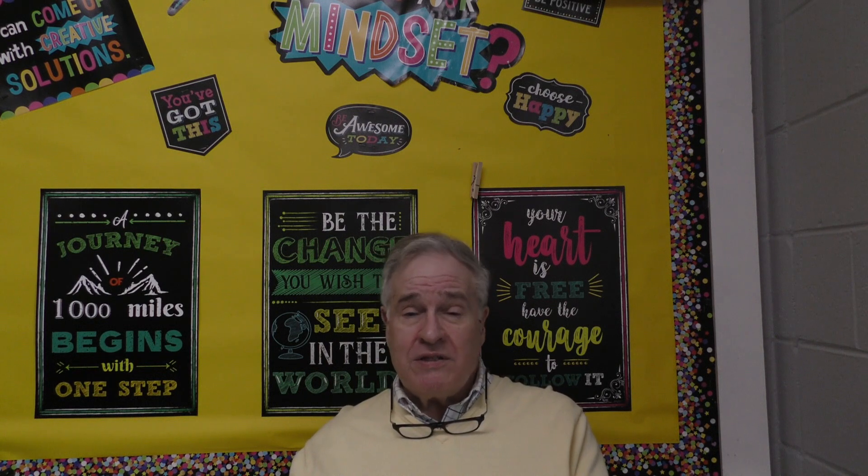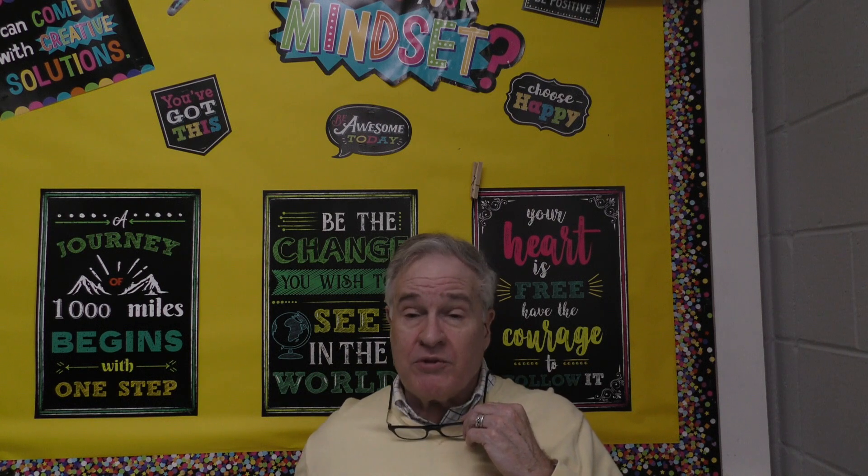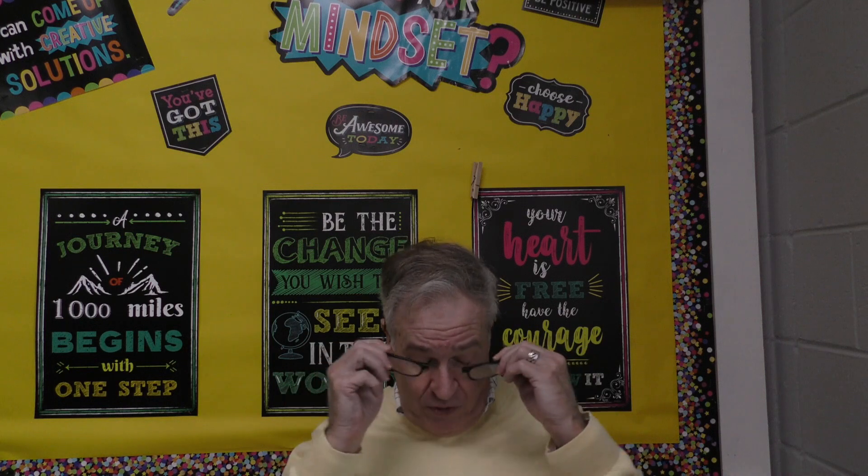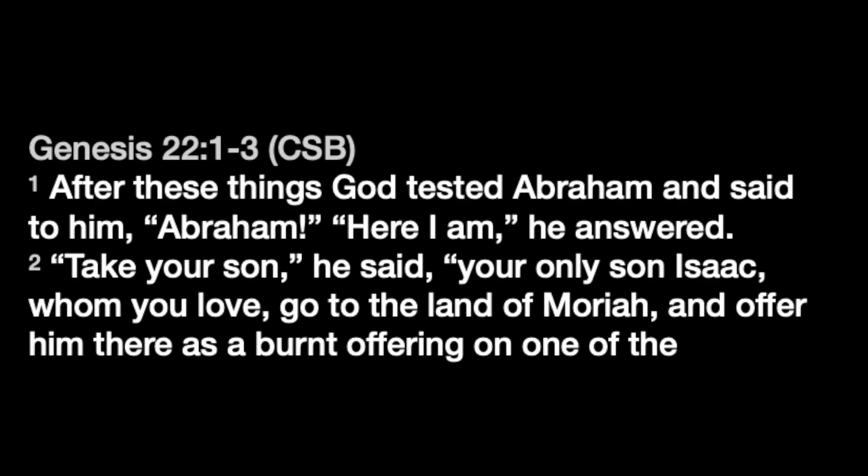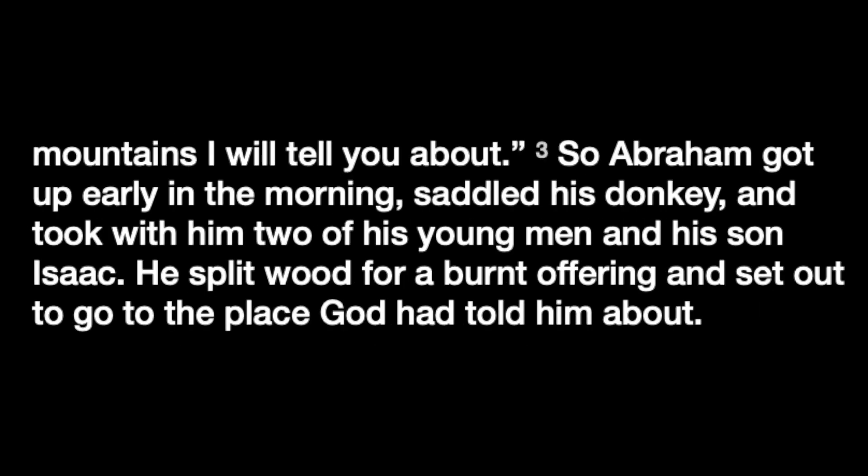This passage begins with a command. In Genesis chapter 22, beginning in verse 1, we read: 'After these things, God tested Abraham and said to him, Abraham. Here I am, he answered. Take your son, your only son, Isaac, whom you love. Go to the land of Moriah and offer him there as a burnt offering on one of the mountains I will tell you about.' So Abraham got up early in the morning, saddled his donkey, took with him two of his young men and his son Isaac, split wood for a burnt offering, and set out to go to the place God had told him about.